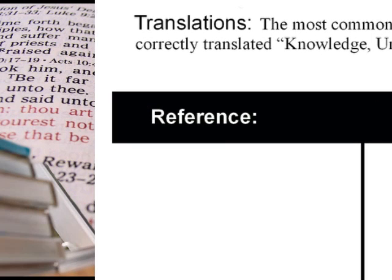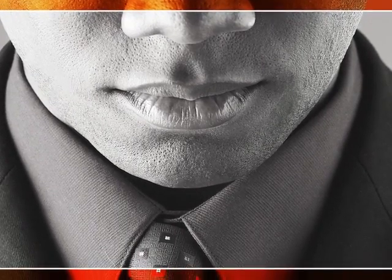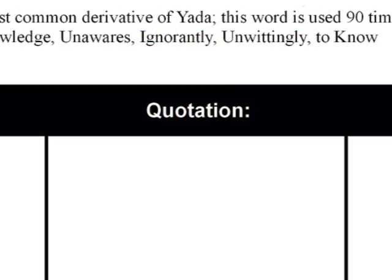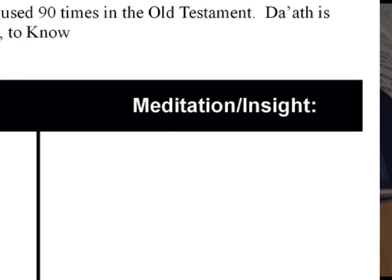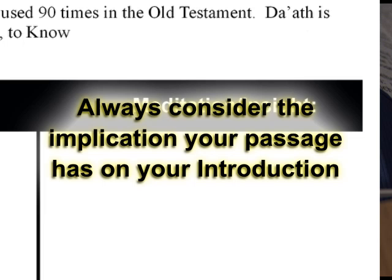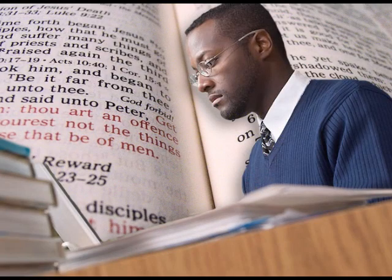Record your scriptural references under the heading entitled 'Reference.' Adjacent to your reference, record a brief excerpt from your scripture indicating how your study word is used in this verse — recorded under the heading of 'Quotation.' Then meditate the passage using the various meditation techniques presented in Episode 4. When you have completed your meditation, briefly record the insights and conclusions you acquired under the heading of 'Meditation Insights.' The insights you record should be what you received in meditation — do not record another person's theology. When you meditate each passage, always consider the implication your passage has on your introduction. Proceed through your list of references and collate your meditations with your introduction.